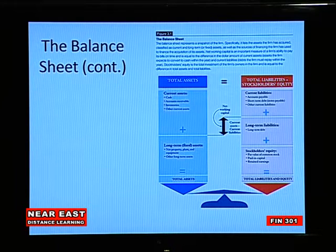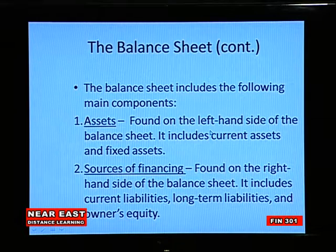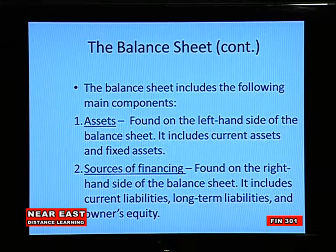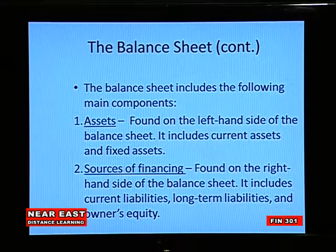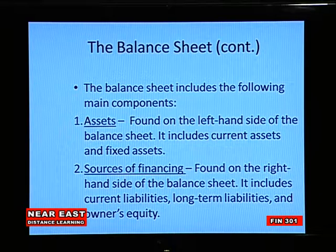In the balance sheet, total assets equal total liabilities and stockholders' equity. The balance sheet includes the following main components: assets on the left-hand side and sources of financing on the right-hand side. Assets include current assets and fixed assets, while sources of financing include current liabilities, long-term liabilities, and owner's equity.